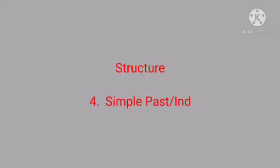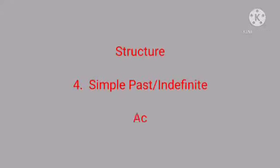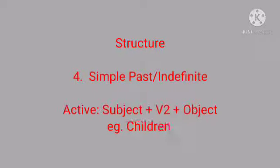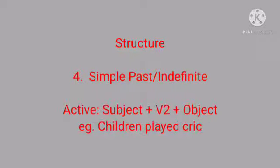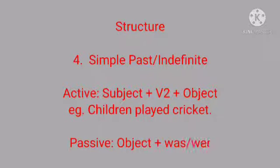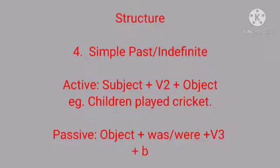So the structure will be object plus has or have plus been plus past participle, followed by preposition by plus subject. The rule of active voice in simple past tense is subject plus second form of verb plus object. Example: children played cricket.